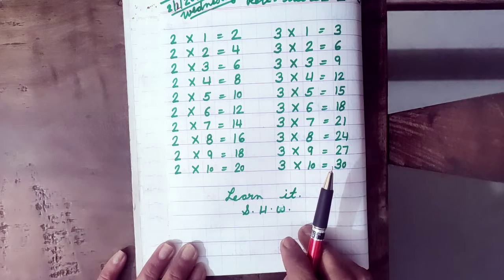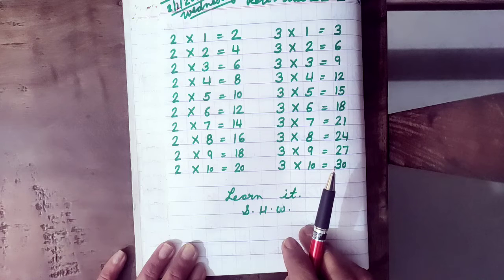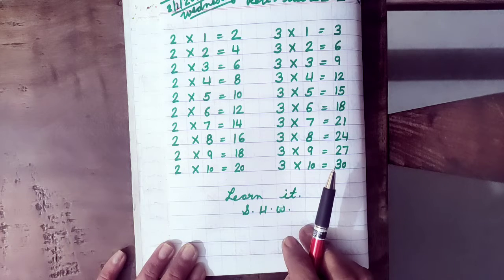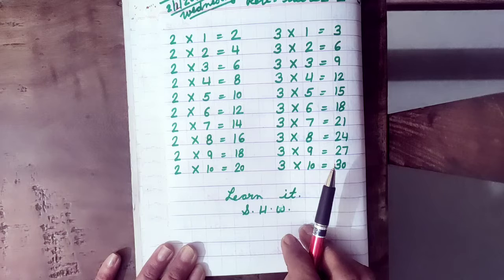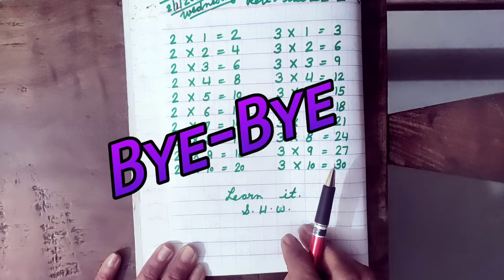Because some students did not reply in the online class, so you have to learn the table. In your syllabus 2 to 10 table will come, so you have to revise it. Meet you soon. Bye-bye.